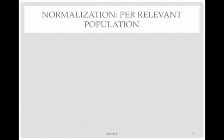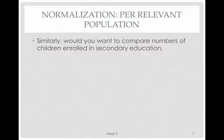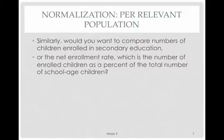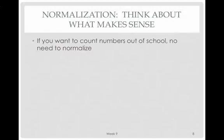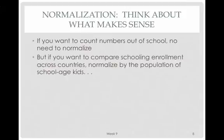There are other normalizations you may come across — per relevant population, for instance. Would you want to compare the number of children enrolled in secondary education, or the net enrollment rate, which is the number of enrolled children as a percent of the total number of school-age children? If you want to count kids out of school and think about the cost to enroll them, you might just look at total numbers. But if you're interested in how well the schooling system is serving kids who need services, you probably want to normalize by the population of school-age kids. Make sure you know what your variables are and think about whether you need to scale them.